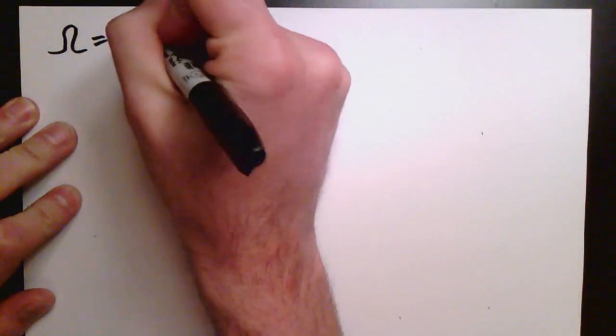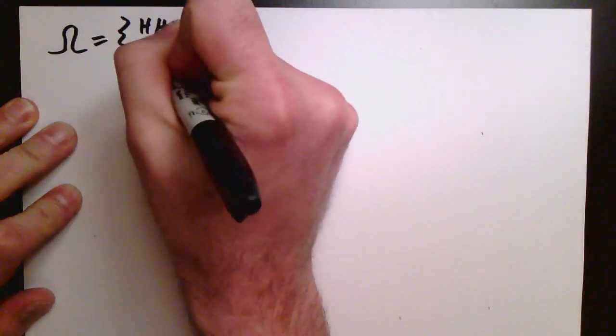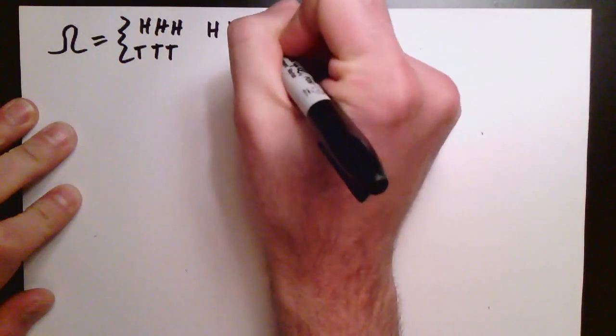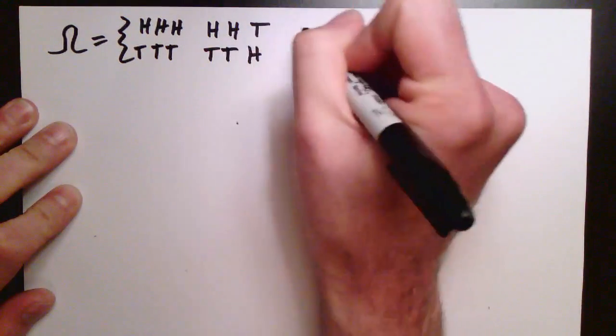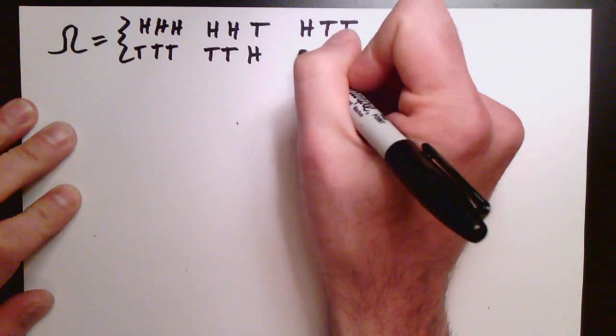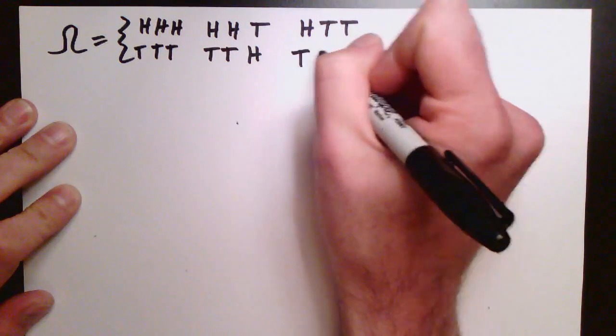Let's consider the probability space made up of flipping three coins in a row. So we have elements of the space are heads, heads, heads—that's all three coins are heads—then heads, head, tails—that's first I flip a head, then a head, then a tail.